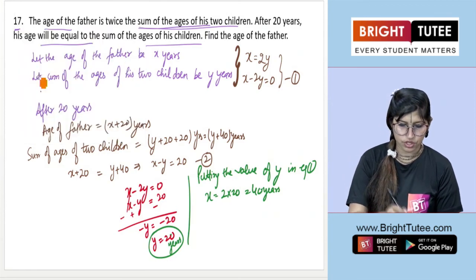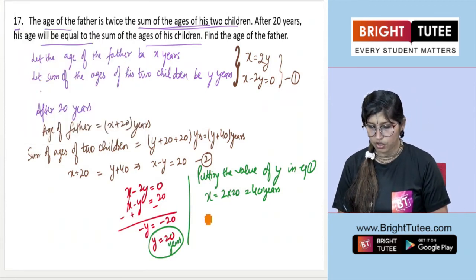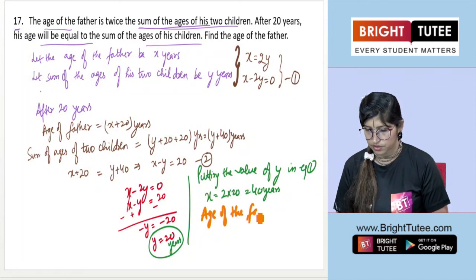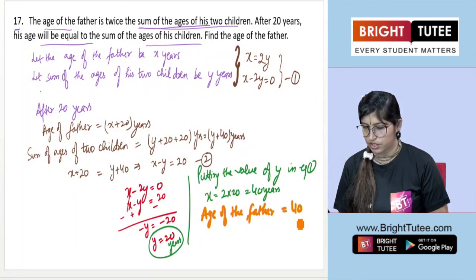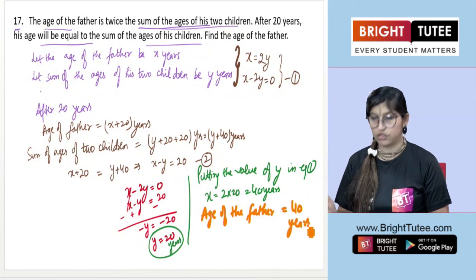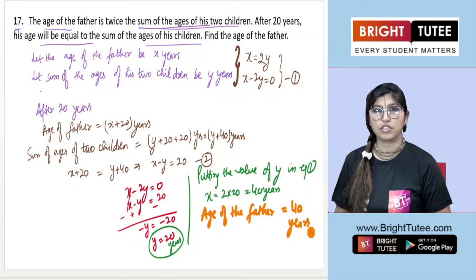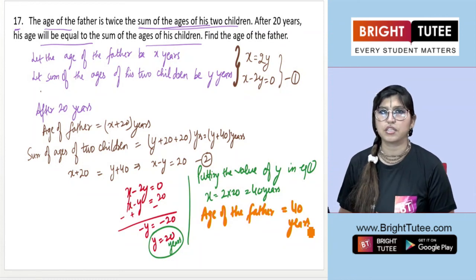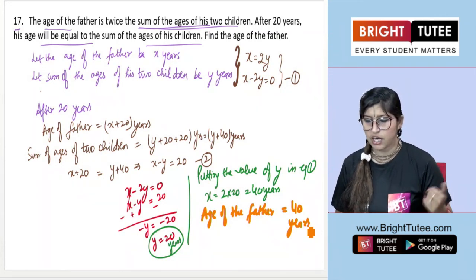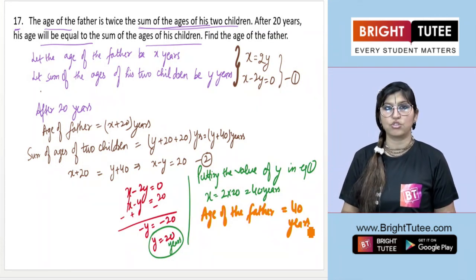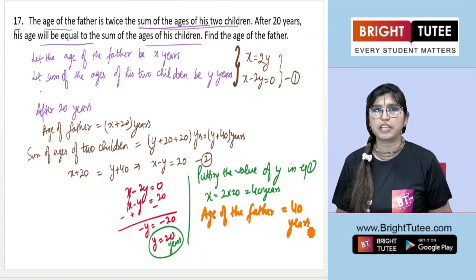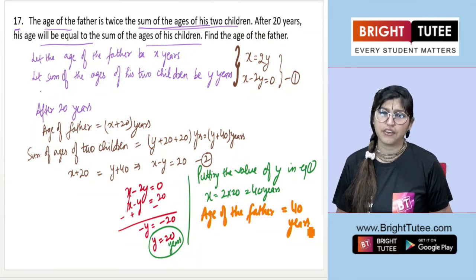We finally got that the age of the father is 40 years. The sum of the ages of the children is 20 years, but they only asked about the father's age. So the answer is 40 years. I hope you understood this question. We're coming up with the next question — till then, stay tuned. Thank you.